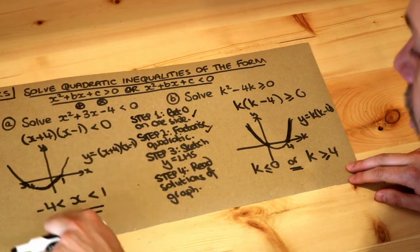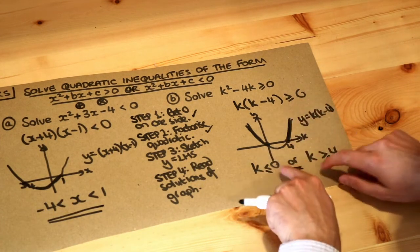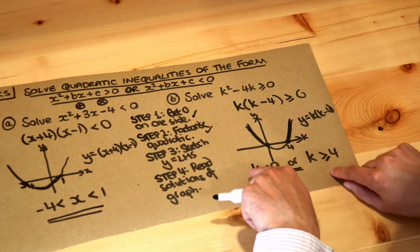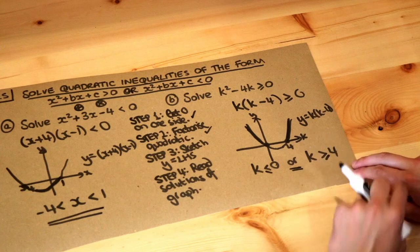Less than zero or less than equal to zero, you get this sort of betweeny case. And if you have greater than zero or greater equal to zero, you have the two tails, and you should have x or k is less than equal to something, or x or k is greater than equal to something.